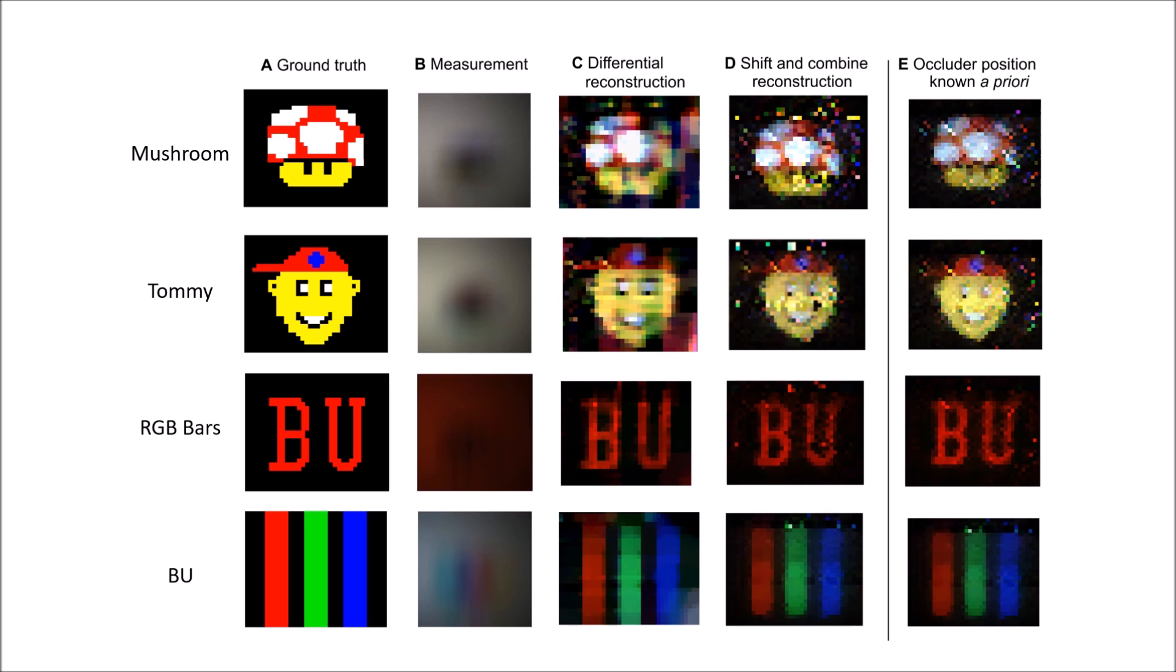It is clear that our technique is able to estimate the hidden occluder position with sufficient accuracy and also form reconstructions which resolve even small details in the scene of interest, such as the eyes of the mushroom and the blue cross on the hat of Tommy.